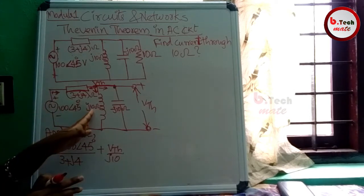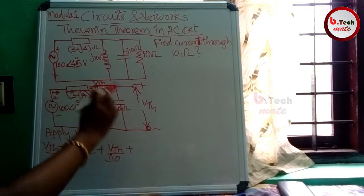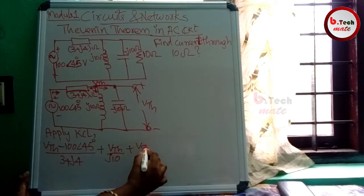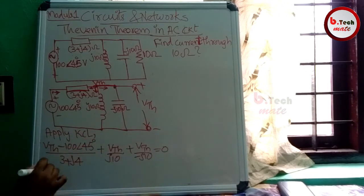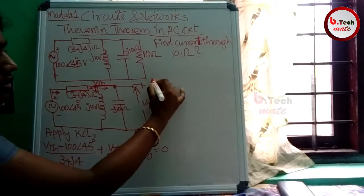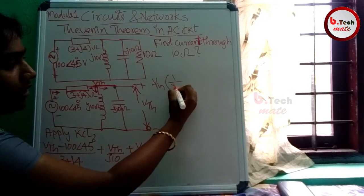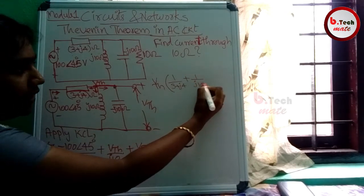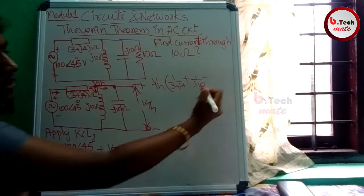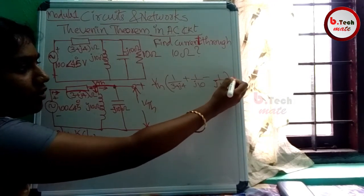Now applying KCL at node S9: we check that the sum of all currents equals zero. This is the capacity: VTH divided by minus J equals the sum of all currents. VTH divided by (1 over (3 plus J)) plus (1 over J) minus (1 over J10) equals zero.